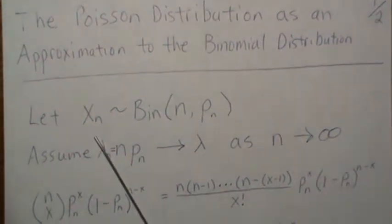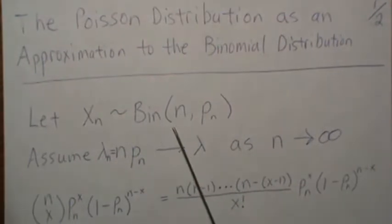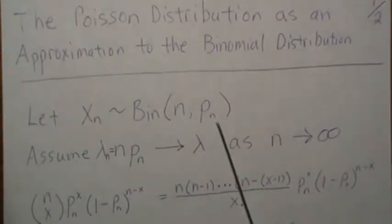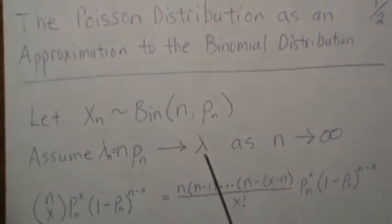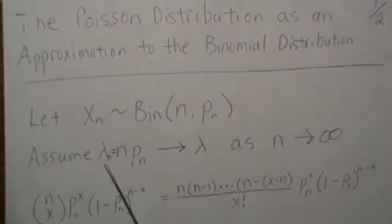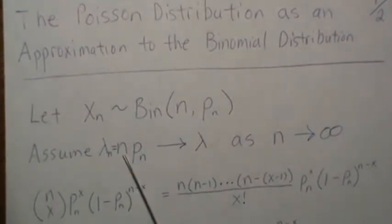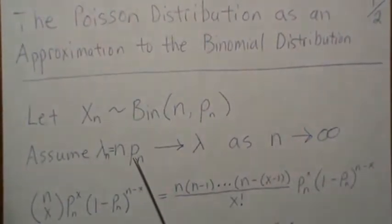So we're going to let X_n be binomial with parameters n and p_n. And we're going to assume that n times p_n goes to lambda as n goes to infinity. In the approximation, we're going to let lambda_n be n times p_n.